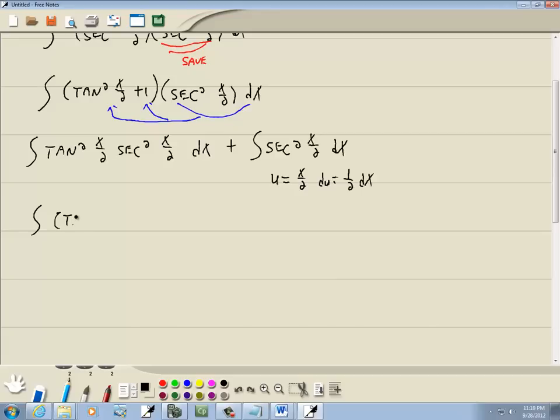Now this first part here, I'm going to rewrite the tangent squared as tangent of x over 2 to the second power, secant squared x over 2 dx. This part right here I need a 1 half inside so I'll put a 2 out in front and then 1 half inside. There we go.